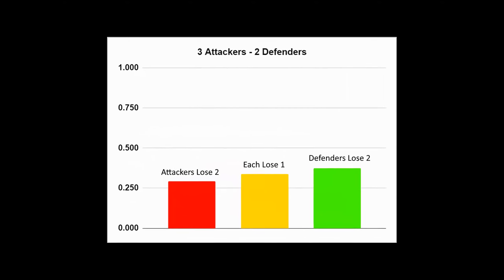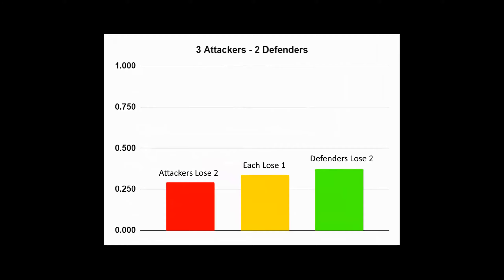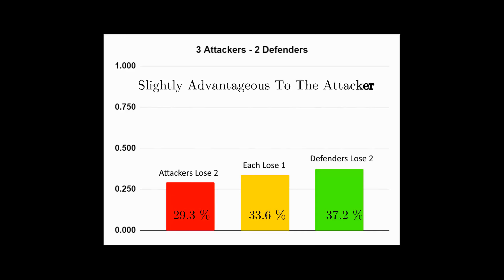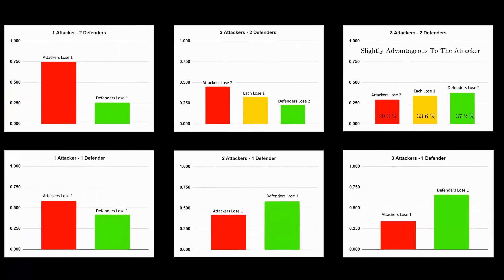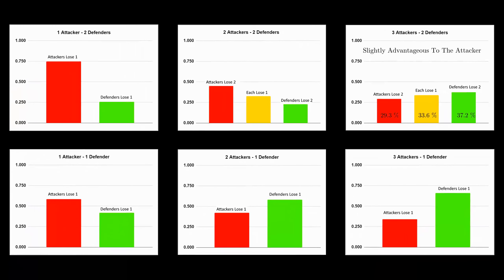Running all 7,776 possible rolls, here are the outcomes. We see that the defender loses both dice 37% of the time, with each losing 1 die 34% of the time, and the attacker losing both 29% of the time. Obviously this result favors the attacker, though it's not quite as strong as I was expecting. 3 attacking dice vs 2 defending dice is one of the 6 possible pairings of dice, and the other 5 all have different outcome percentages.